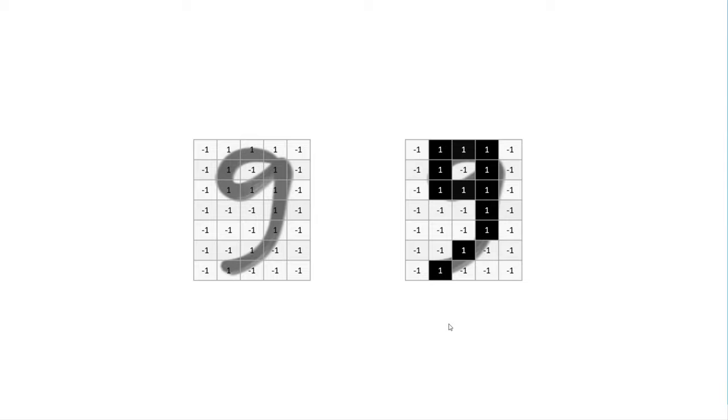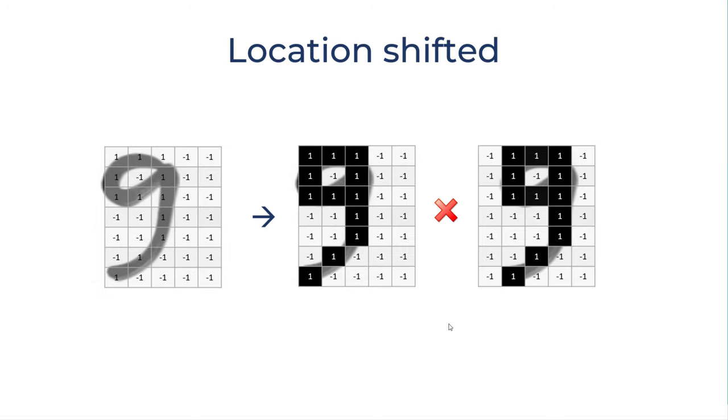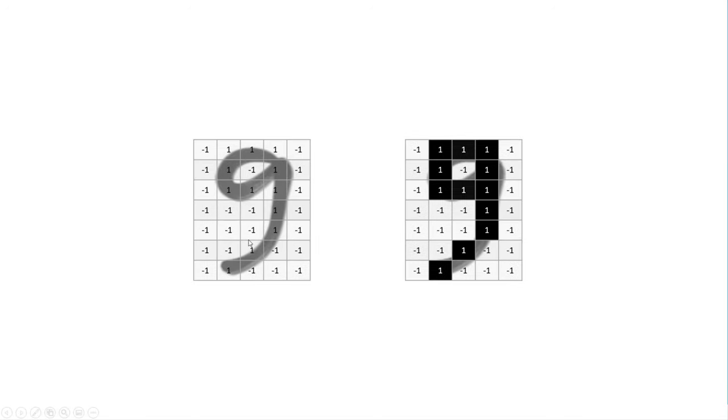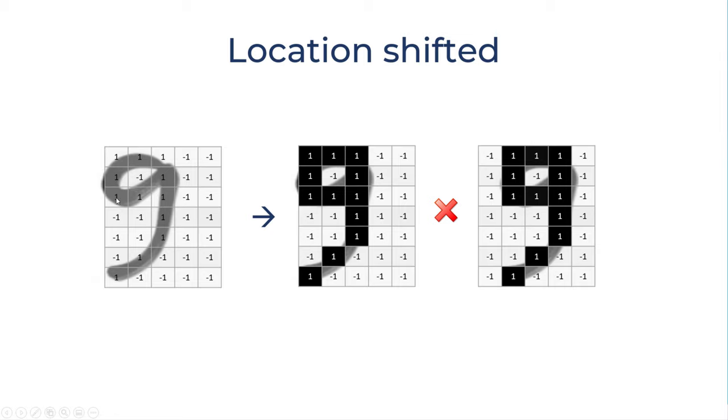But the issue with this presentation is that this is too much hard coded. If you have a little shift in digit 9, for example 9 here was in the middle but in this case it is in the left, the representation of numbers just changes. It doesn't match with our original number grid and computer will not be able to recognize that this is number 9.